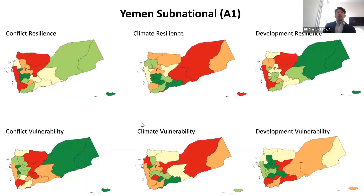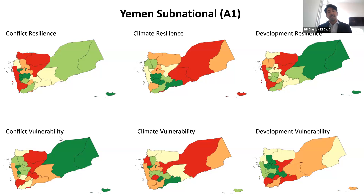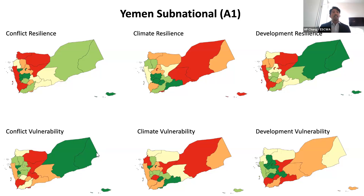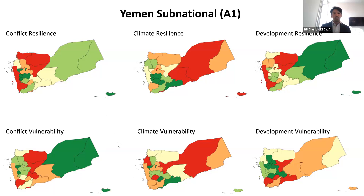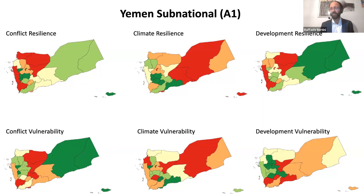These are preliminary results for the Arab Risk Monitor at the sub-national level for Yemen. Results are presented at the administrative level one — the governorate level — but data is also available at the district level. The sub-national analysis is focused on conflict for both resilience and vulnerability dimensions. This is a challenge we are working on to give more nuance especially to policymakers, practitioners, and experts at the sub-national level.